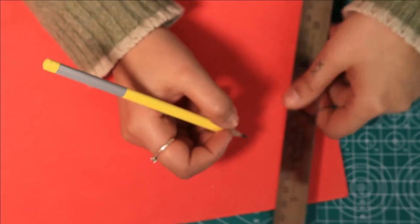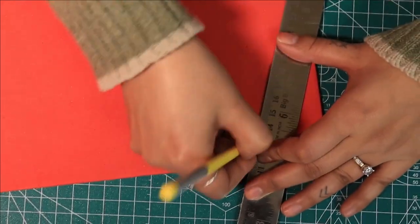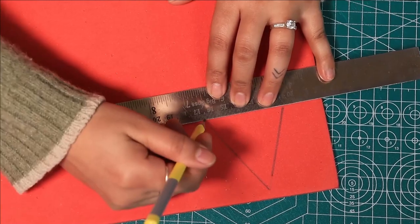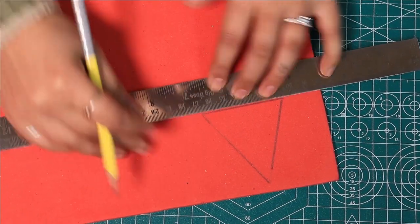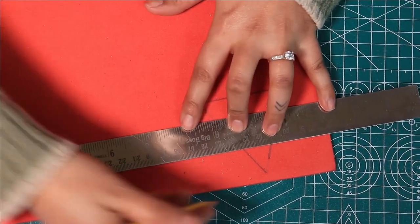Our first step is to draw a star. Draw a triangle and then another inverted triangle.